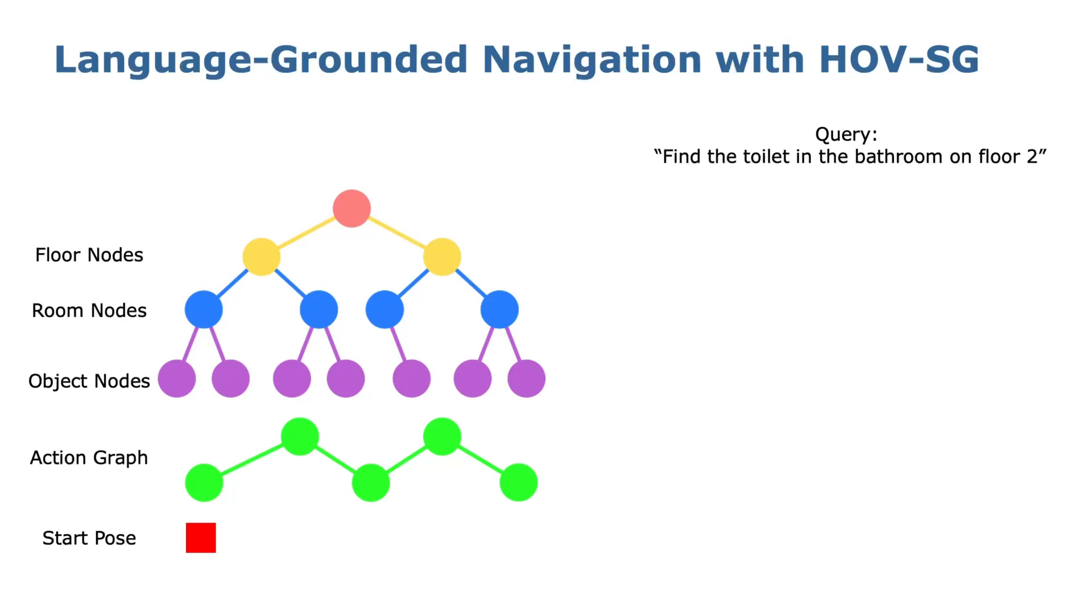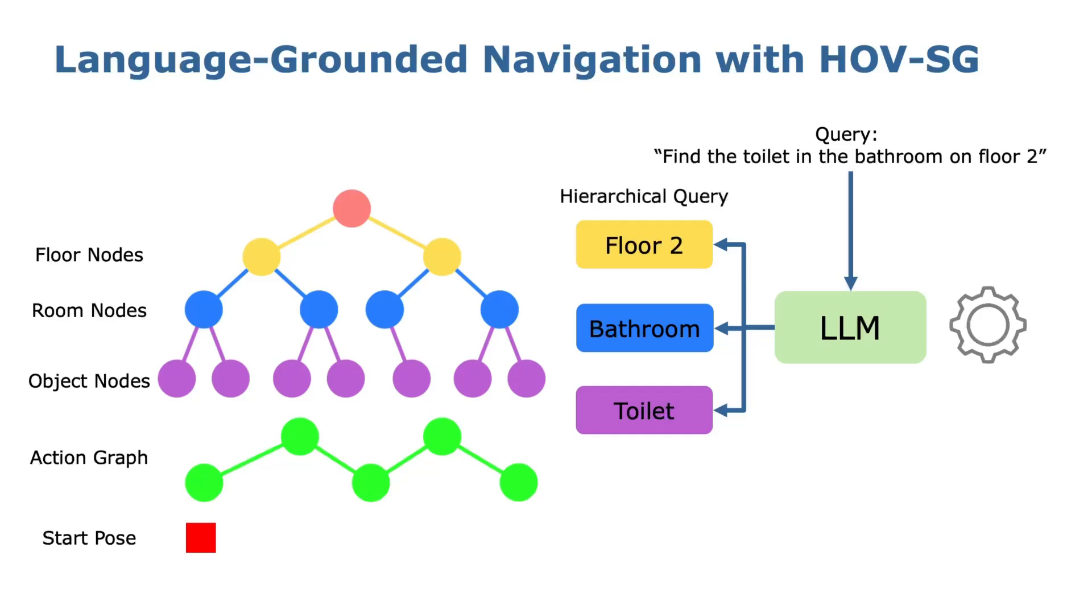To enable language-grounded navigation, we break down a lengthy instruction such as 'find the toilet in the bathroom on floor 2' with large language model into three queries: floor, room, and object. We then sequentially query at each level of HofSG to progressively narrow down the search space. Later, we utilize the action graph to plan the path to the target.